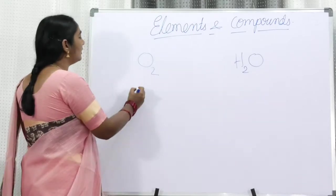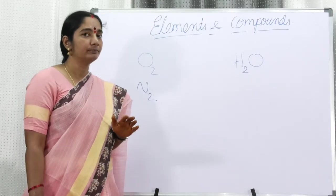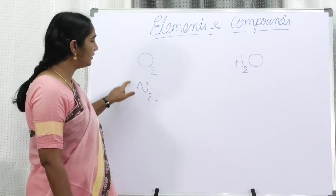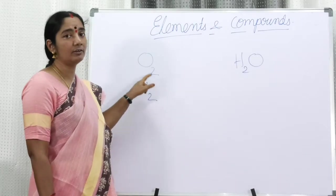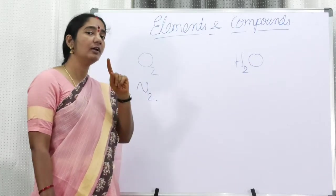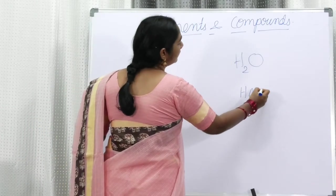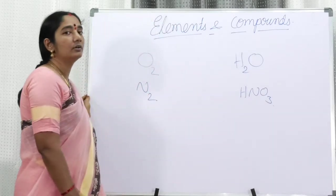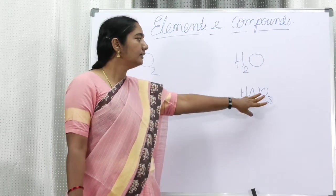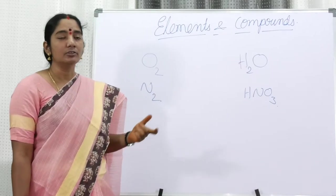If we take water, water is nothing but H2O — the oxygen is combining with two hydrogens. So water is a compound because it has two different varieties of atoms. Oxygen (O2) is an element because it has only one variety of atom combined. Similarly, nitrogen: N2 — nitrogen cannot exist in atomic form, two atoms of nitrogen combine to form a nitrogen molecule. N2 is an element because this molecule is made up of only one variety of atoms. But HNO3, nitric acid, is a compound — it contains one hydrogen atom, one nitrogen atom, and three atoms of oxygen all combined together.